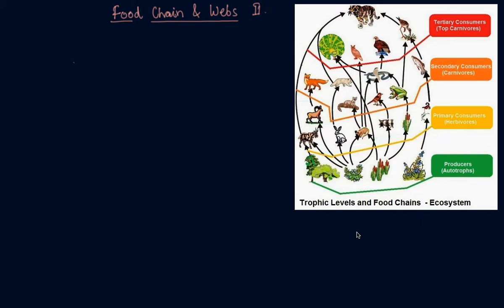So in the previous lecture we have discussed about mainly the producers, the primary consumers and the secondary consumers. And there is one more type of consumers which are called tertiary consumers and they are at the fourth level, the fourth trophic level. As you can see here in the diagram, these are the tertiary consumers.